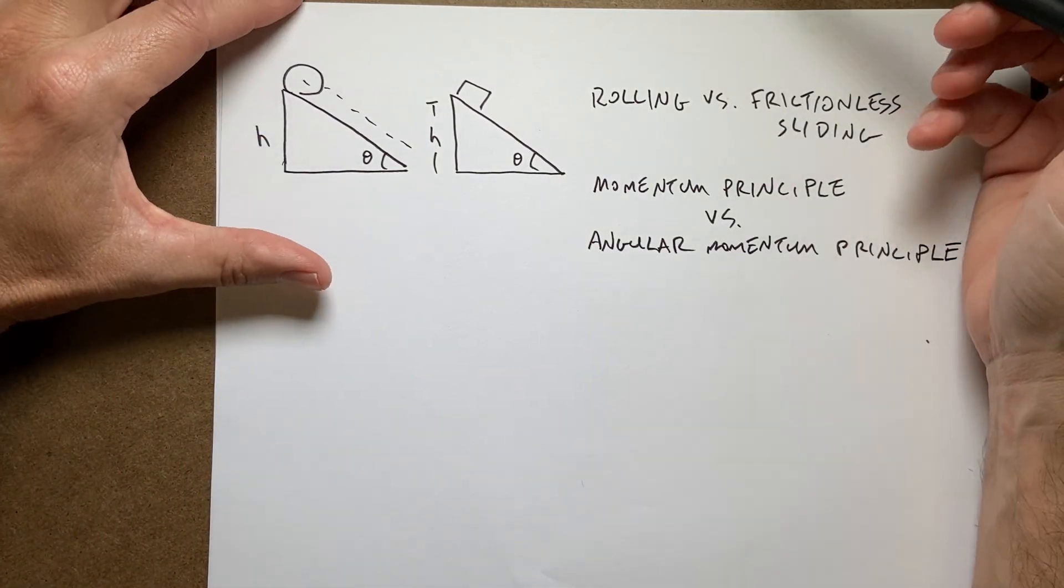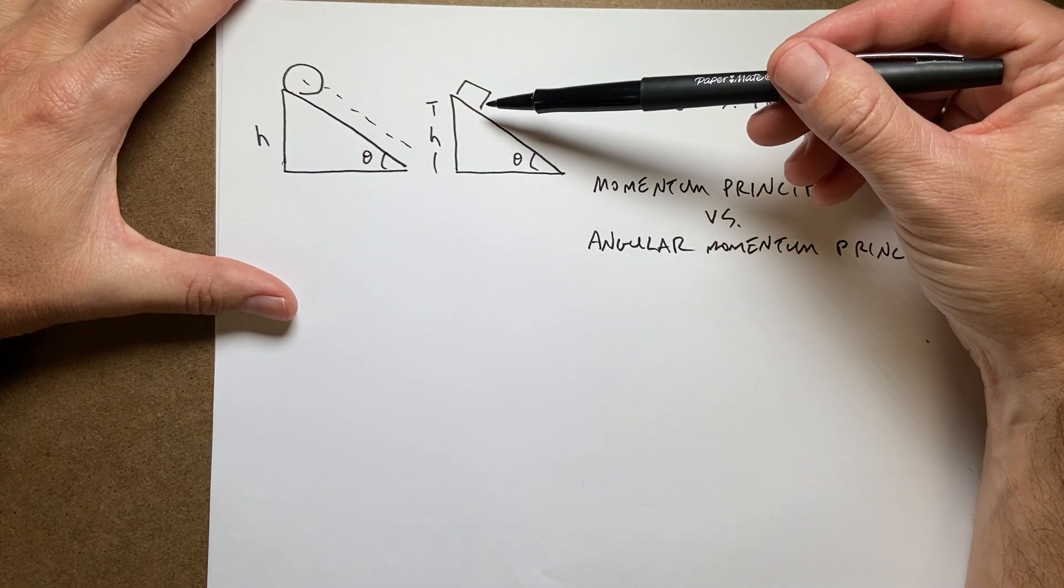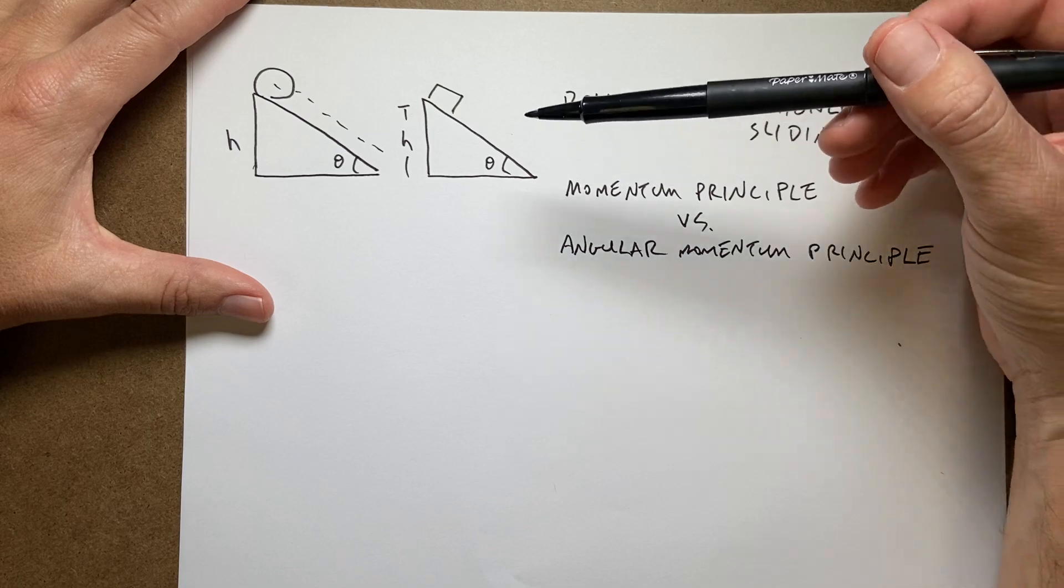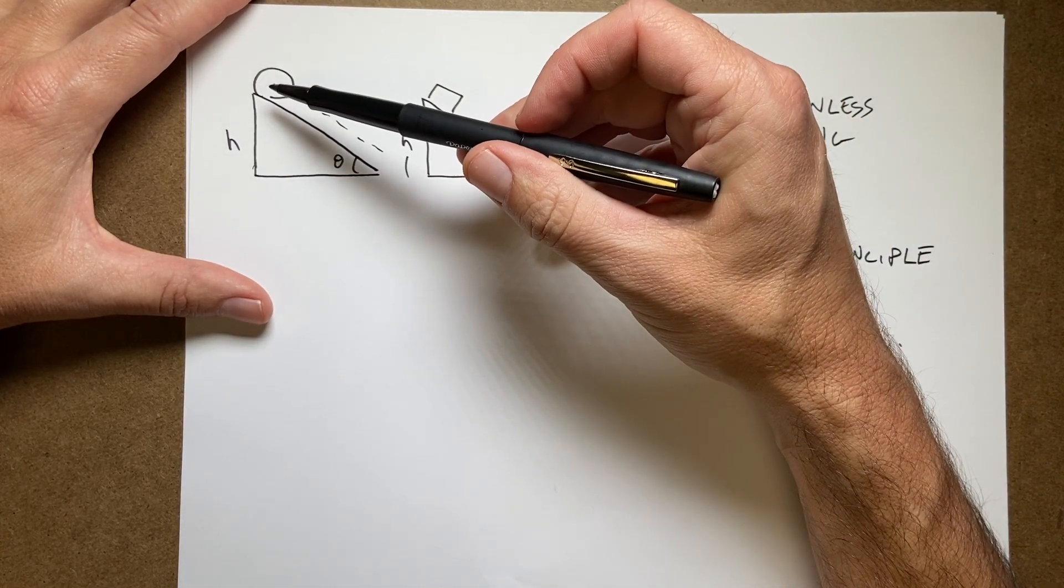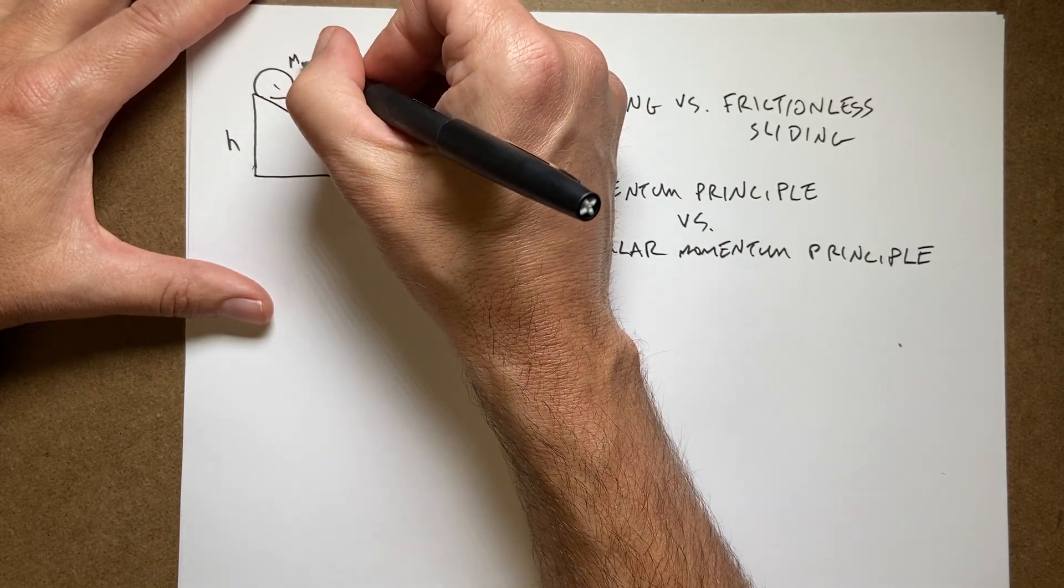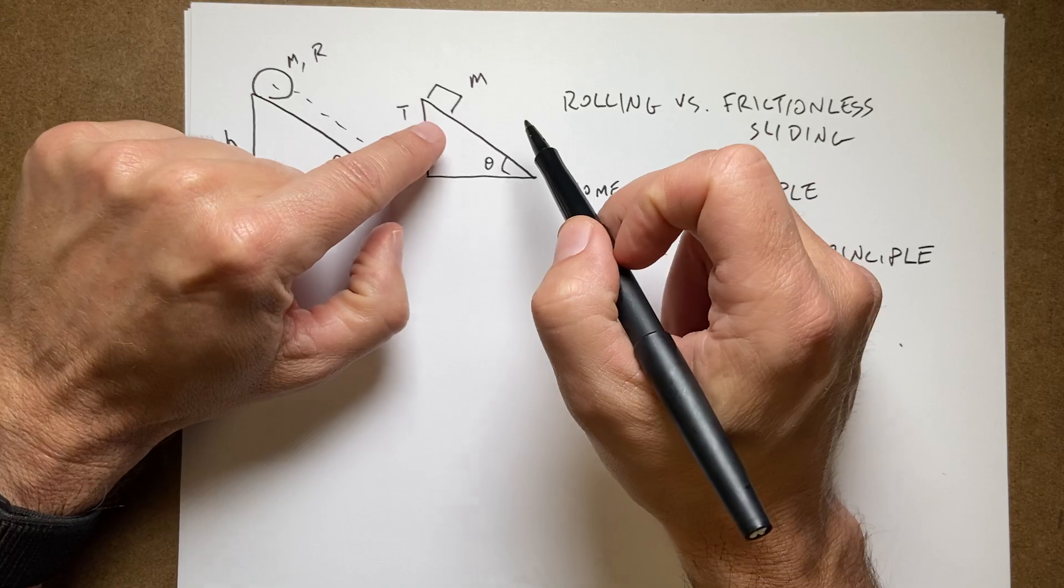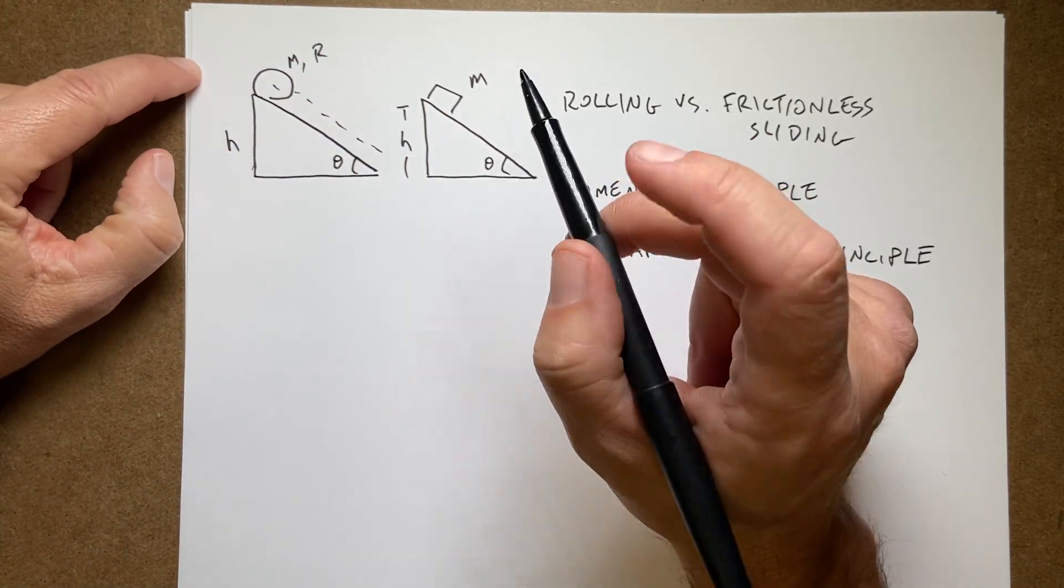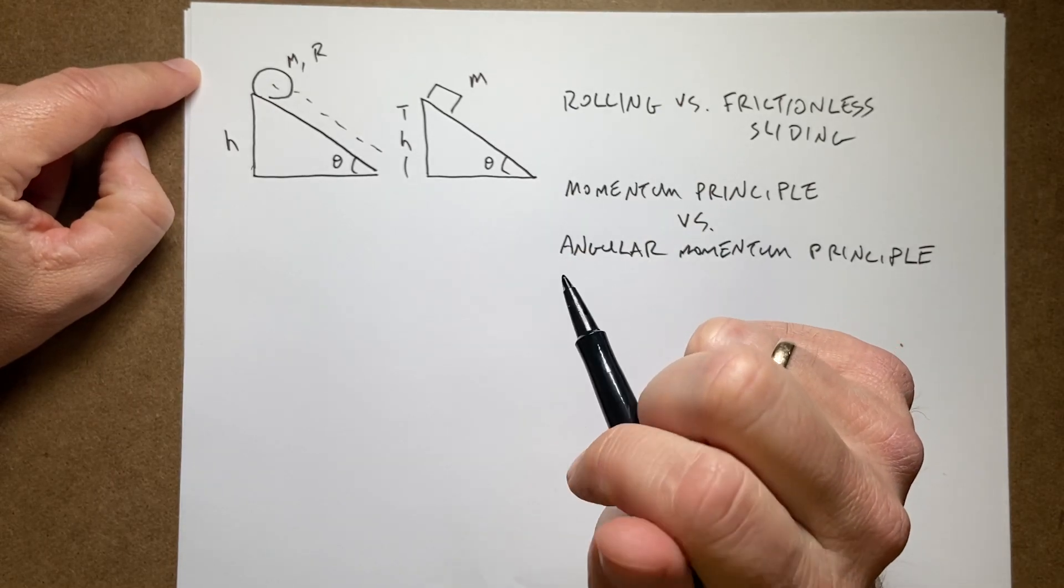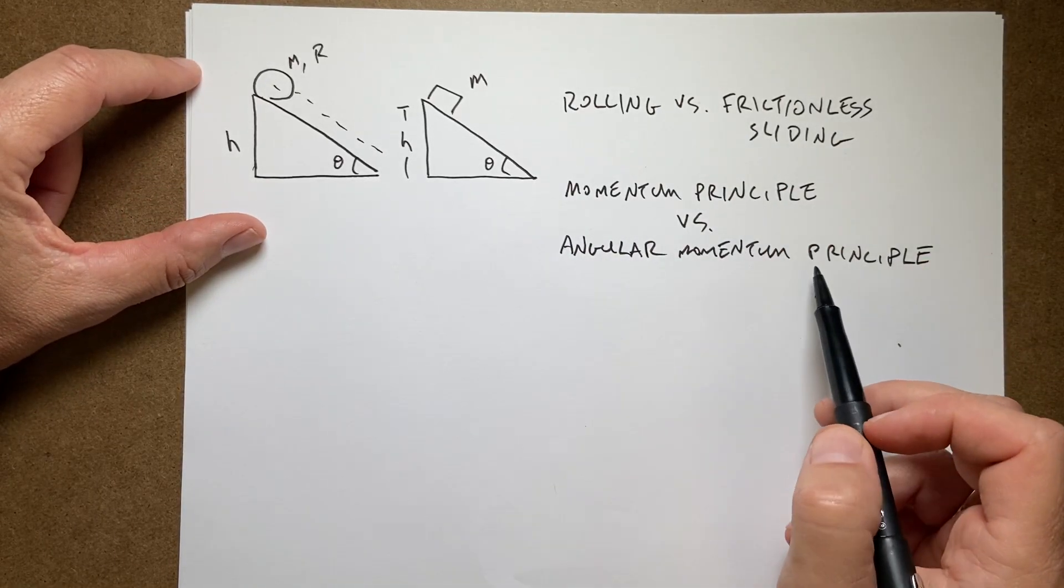Okay, this is part two. So in part one I considered a frictionless block sliding down a plane and I found the speed at the end and the acceleration. And then I did it again for a rolling disc with mass m and radius r. The answer was that the block was going faster at the bottom and had a greater acceleration. But I used the work energy principle. Now let me redo this using the momentum principle and the angular momentum principle.